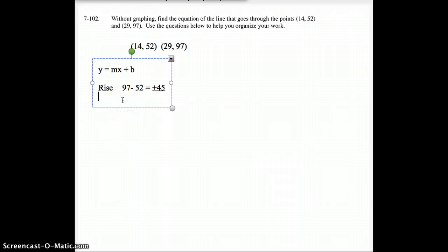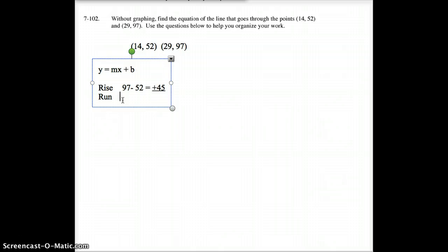Then we need to find the run. The run, in this case, went from 14 to 29. So we're going to do the 29 minus 14. And that equals, that went up a positive 15. In fact, I should put that positive sign in front of there. So a positive 45 over a positive 15.